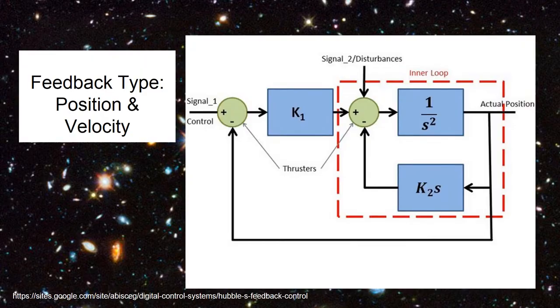In the world of controls, this is a simplified block diagram, where K1 represents the position feedback, K2 represents the velocity feedback, and the two green circles represent the thrusters.